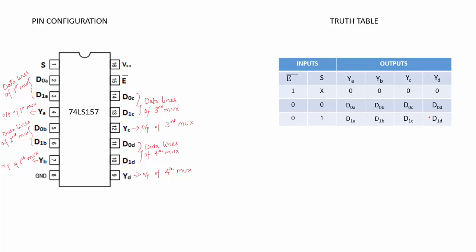Now in order to find the output expression for each multiplexer — YA, YB, YC and YD — we derive them from the truth table. YA can either be D0A or D1A depending on E-bar and S. The min-term representation when E-bar is 0 and S is 0 is E·S-bar, and YA is D1A when E-bar is 0 and S is 1, so its min-term representation is E·S. If a variable is 0 we complement it; if it is 1 we write it as is.